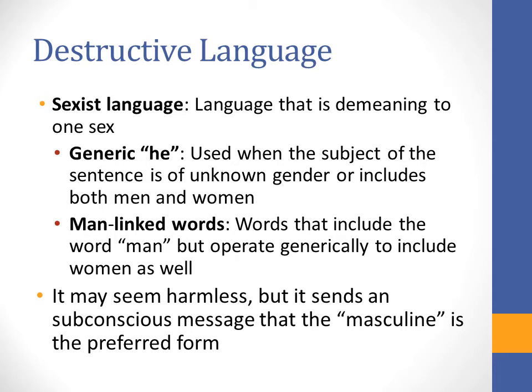Throughout all textbooks and magazines, the generic 'he' was appropriate and used up until the 1990s, even when the subject of a sentence was of unknown gender or included both men and women. Additionally, we have man-linked words — words that include the word 'man' but operate generically to include women as well. It may seem harmless, but what it does is send a subconscious message to young girls that the masculine form is the preferred form.